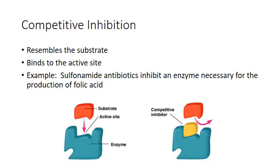There are three types of inhibition that you need to know. The first one is competitive inhibition. Competitive inhibitors resemble the substrate. They're kind of like imposters. They have a shape that is similar to the shape of the regular substrate, and because they have that similar shape, they're able to fit into the active site on the enzyme.